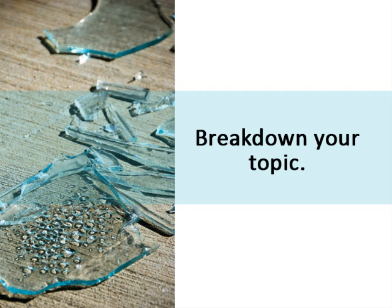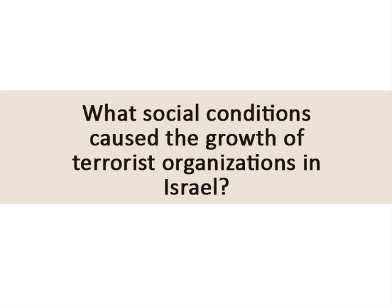This is one of the key things to remember about library database research. Take a look at this sample topic: What social conditions caused the growth of terrorist organizations in Israel? The key elements of this research question are social conditions, terrorist organizations, and Israel. A causal relationship is already implied by searching for these keywords together, so 'caused' and 'growth' are not really necessary as keywords.